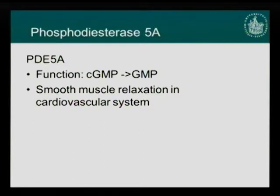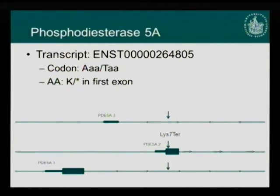What is phosphodiesterase 5A? Its main function is to convert cyclic GMP to GMP, and you probably know this gene because it's responsible for smooth muscle relaxation in the cardiovascular system. Looking at the variant on the transcript level, PDE5A has three transcripts. The variant lies in the intron in two of them, but lies in the exon in one transcript — and in that transcript it induces an early stop codon, meaning we have reduced levels of PDE5A.